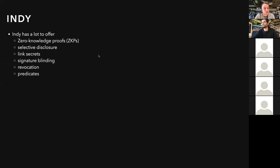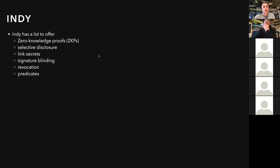With BBS Plus, it's not quite there yet and there are features missing, but it has a lot to offer that Indy has out of the box: zero-knowledge proofs, selective disclosure, signature blinding, and a sort of link secret works. Revocation and predicates are not quite there yet, but they will be. Now with W3C credentials and BBS Plus, we have to take a step back and build everything we already could do in ACA-Py.